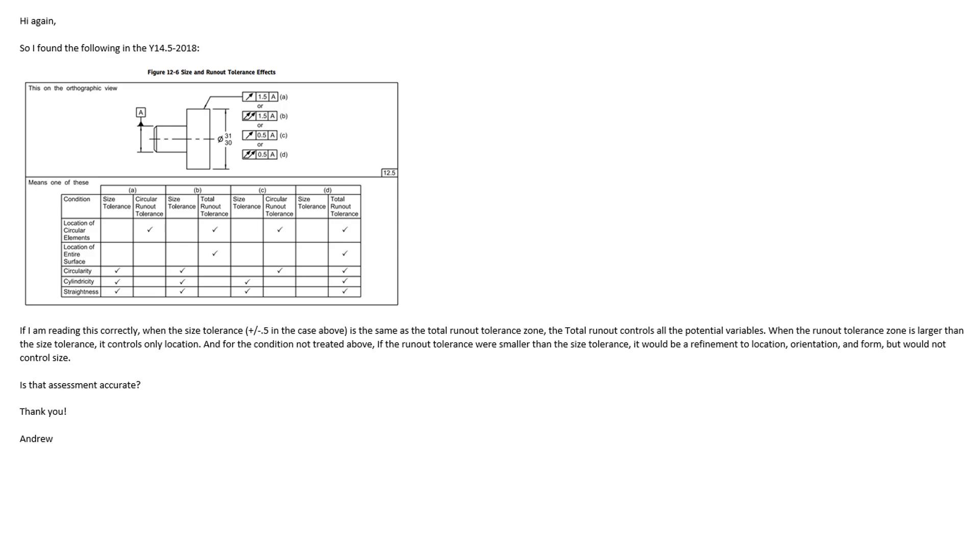When runout tolerant zone is larger than the size tolerance, it controls only location and orientation in this case too, but it would be location and orientation. And for the condition not treated above, if the runout tolerance were smaller than the size tolerance, it would be a refinement to location, orientation, and form, but would not control size. And that assessment is accurate. Yes, Andrew, you got that right.